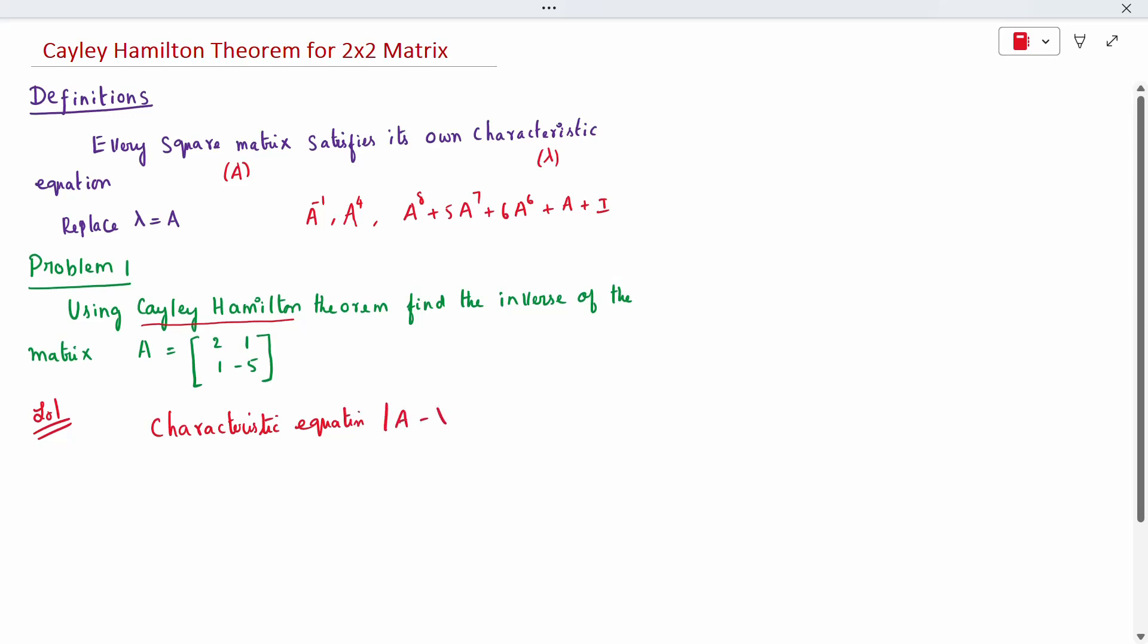I will write the characteristic equation. A minus lambda I equal to 0. So for the given question, I will write it. 2 minus lambda, 1, 1 minus 5 minus lambda equal to 0. Normal 2 cross 2 determinant. Normal multiplication, we can multiply it.